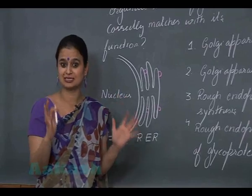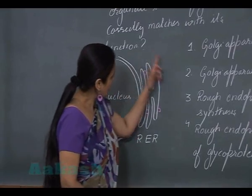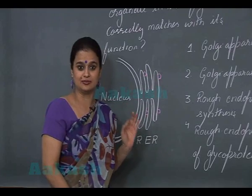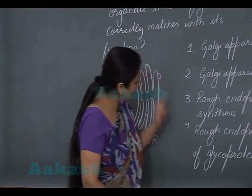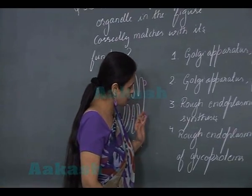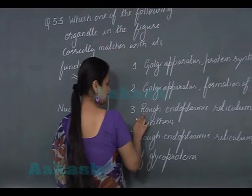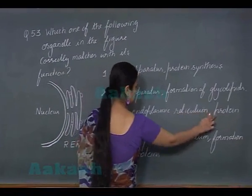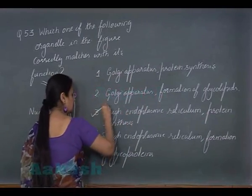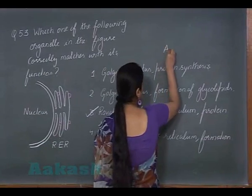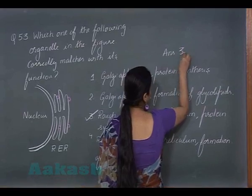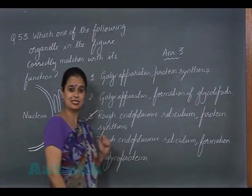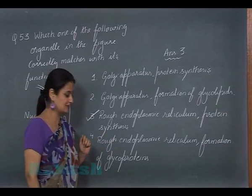Since ribosomes are the protein factories, the RER is involved in protein synthesis. Among the four options, the correct one is option 3: rough endoplasmic reticulum, which is involved in protein synthesis. So the answer for question 53 is option 3. Now let's discuss question 54.